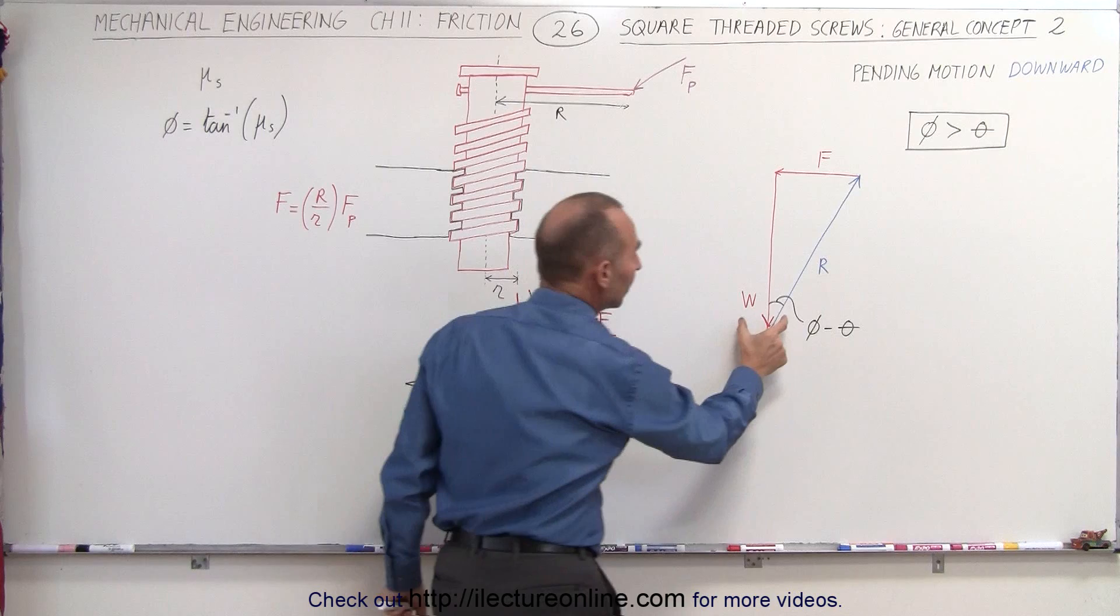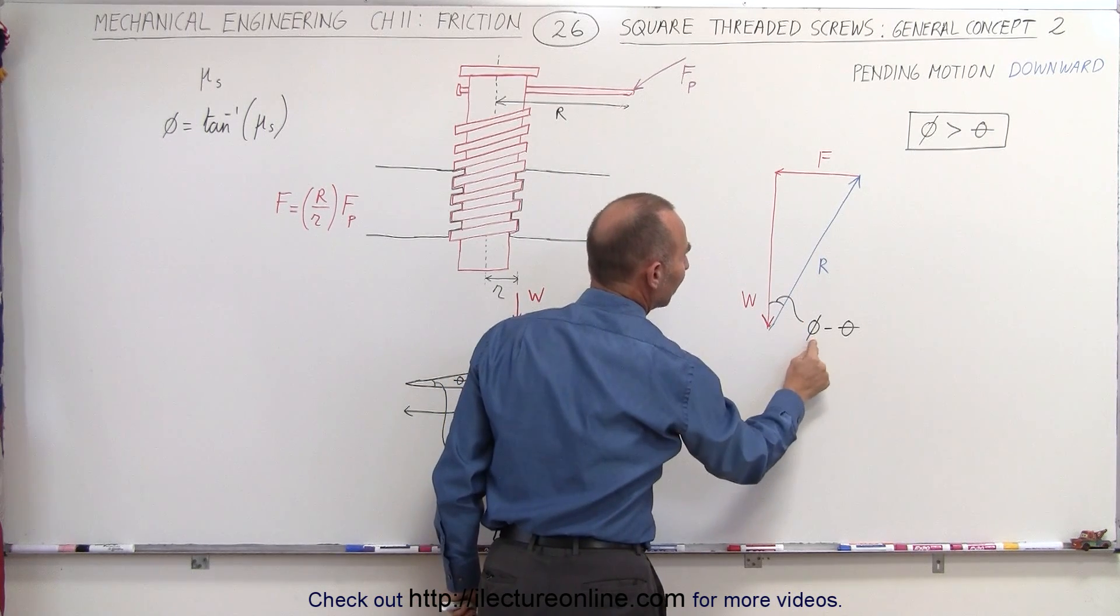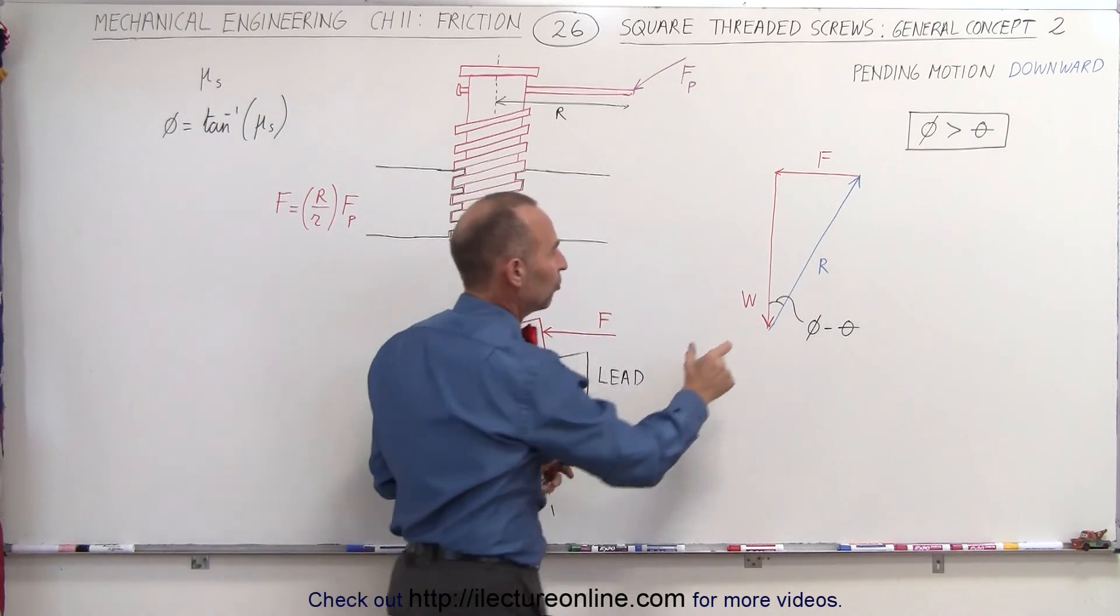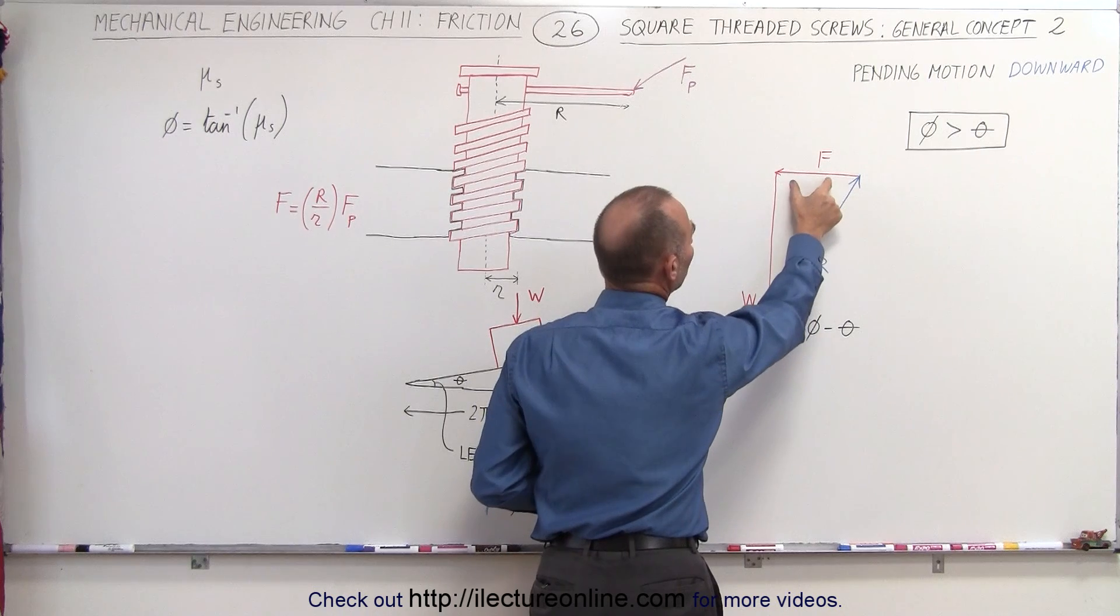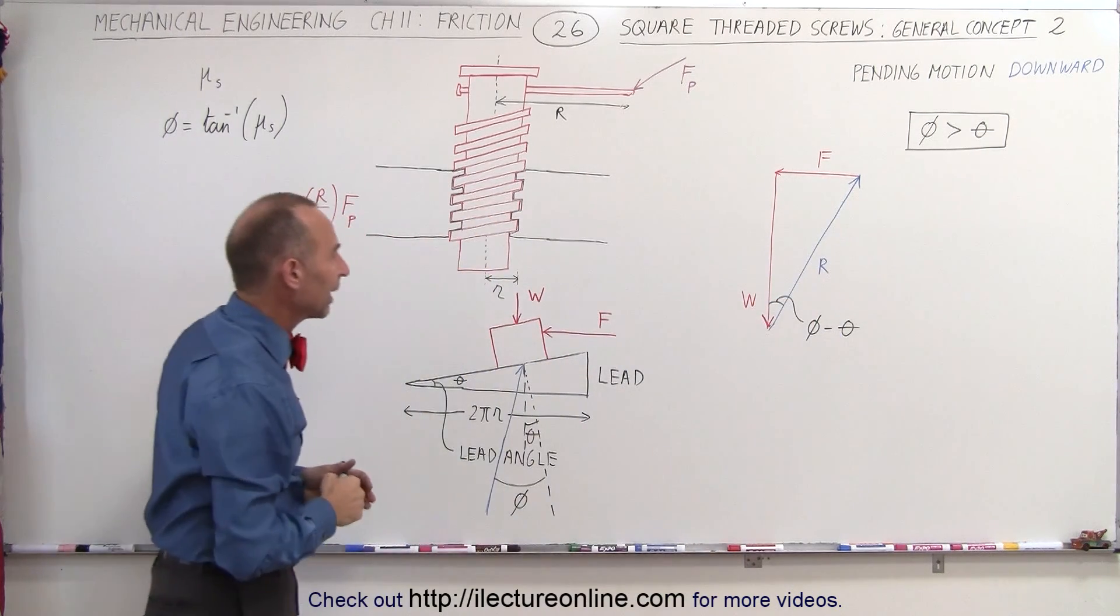Also notice that the angle here between the vertical, the weight, and the reactionary force is now phi minus theta, which is a smaller angle than what we had in the previous video. A smaller angle here means that we need a smaller force in order to get the screw down. That's another way of looking at it.